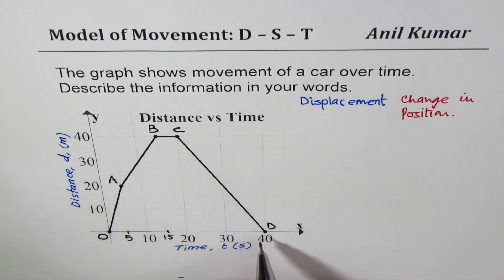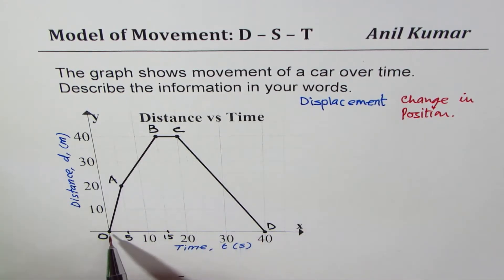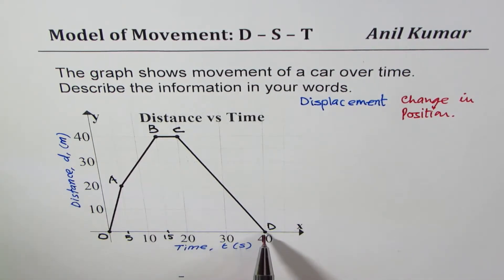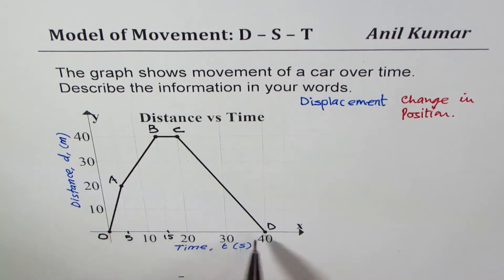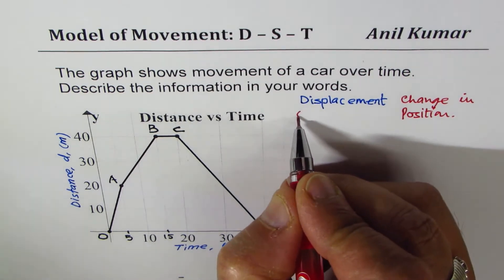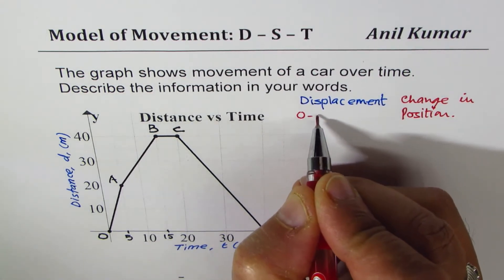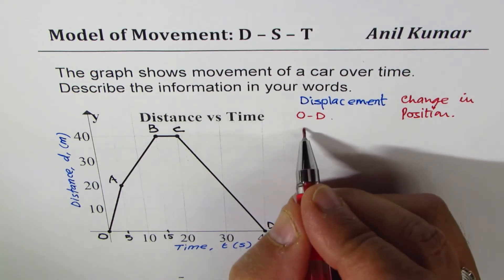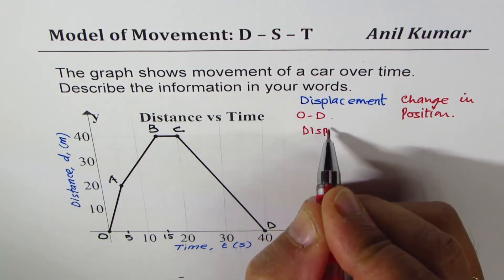In our journey, the car starts from a point, and on the distance-time graph the starting position is 0. When the car returns to point D, we say that the displacement is 0, because displacement is change in position and the car ends where it started.